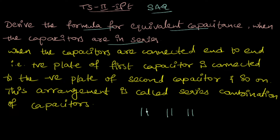These three capacitors are connected end to end. That means the positive plate of the second capacitor is connected with the negative plate of the first capacitor, and the negative plate of the second capacitor is connected with the positive plate of the third capacitor. Here the capacitors are connected end to end.